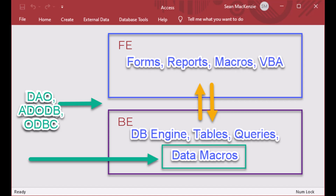What do triggers do? Triggers allow you to have events that happen inside your relational database management system that you can trigger in order to update data in other parts of your database — things like notifications, a log, and all kinds of things like that. For example, if you wanted to create a log record every time the price of an item in another table was updated, you could do that. There are thousands of ways that data macros could be used.